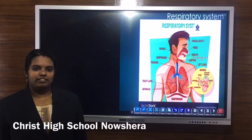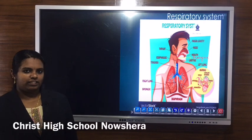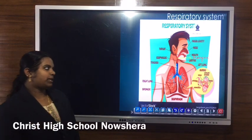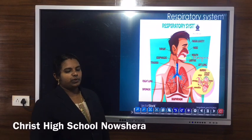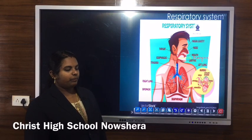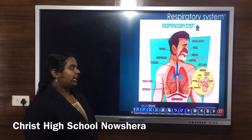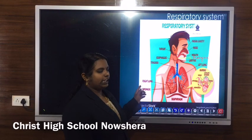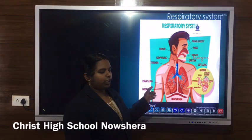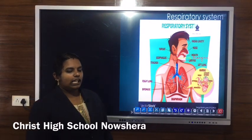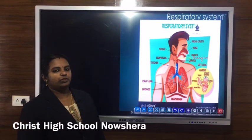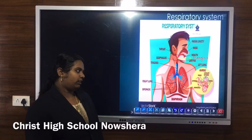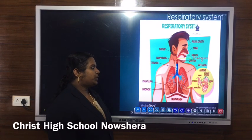The human respiratory system consists of external nostrils or nose, which leads to nasal cavity and pharynx, then larynx, then trachea and bronchus, bronchioles, and the tip region of bronchioles consists of air sacs or alveoli.